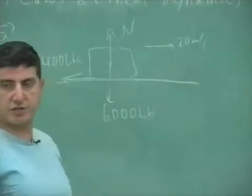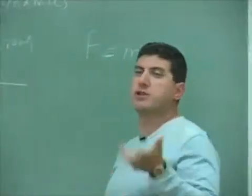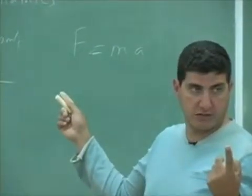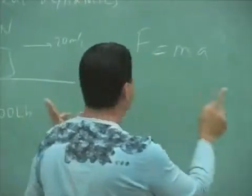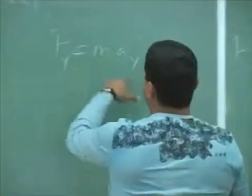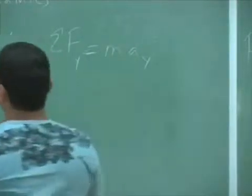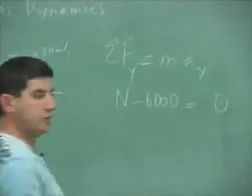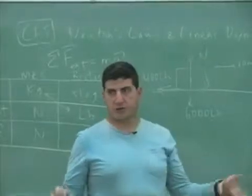So what's the acceleration of the car? F equals MA — the sum of all external forces equals MA. In the X direction, there is only one force. In the Y direction, they cancel each other. We split this into two parts: FY equals MAY, and FX equals MAX. The sum of all forces in the Y direction equals MAY. So N minus 6,000 equals zero — it's not accelerating in Y. Therefore, the normal force equals 6,000.